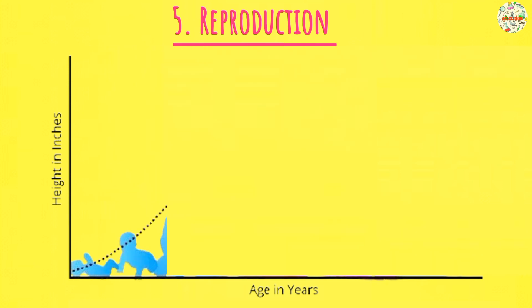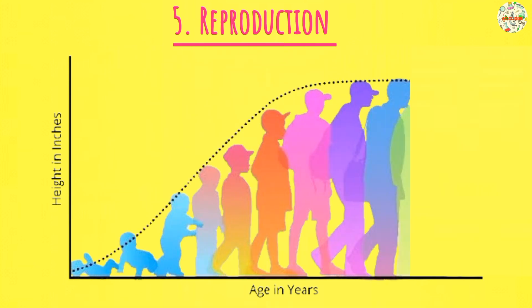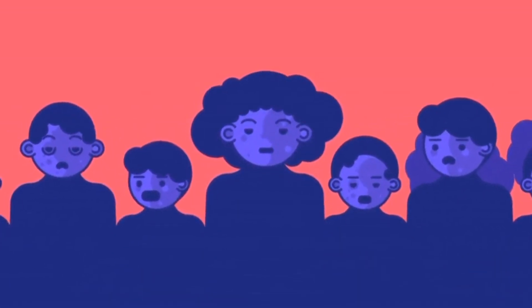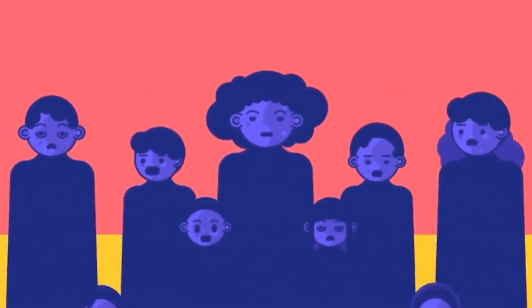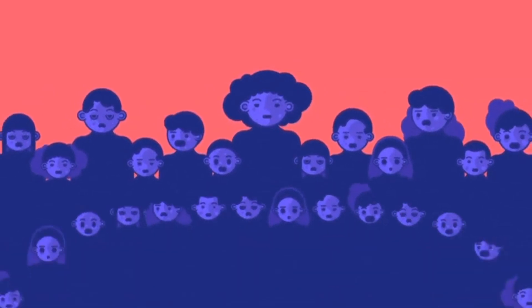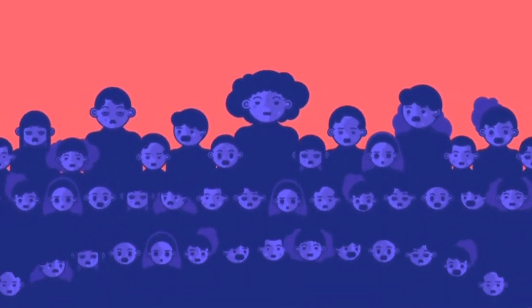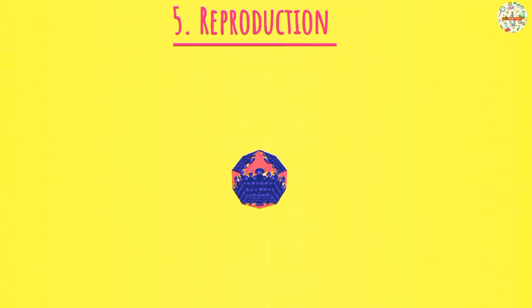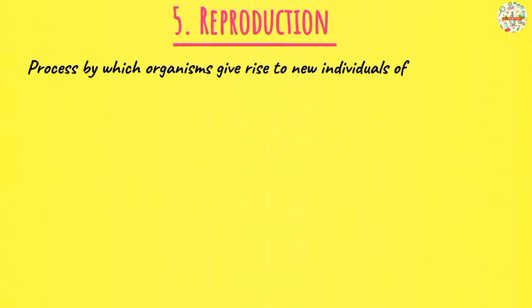Characteristic number five: reproduction. So all living things die after a certain period — this is what is referred to as the lifespan. The lifespan changes from one species to another. For example, humans might have a lifespan of around 60 to 80 years, and it's different in different animals. For this reason, the living members of a species need to give rise to new individuals to ensure the continued existence of the species. Without new members, a particular species is going to become extinct.